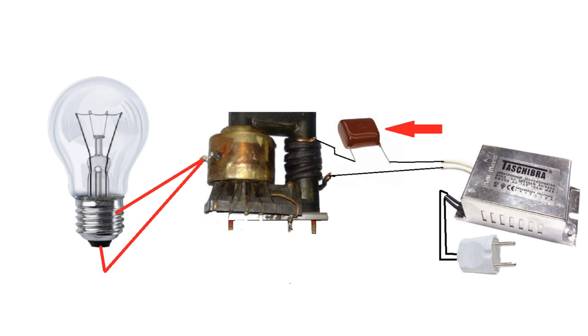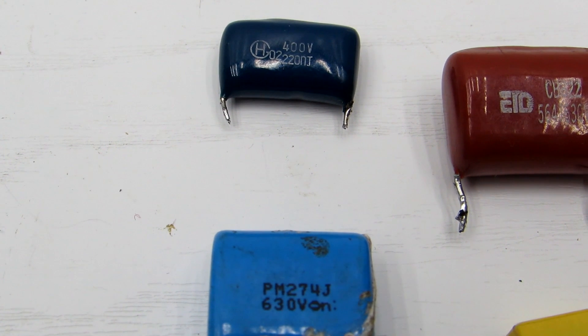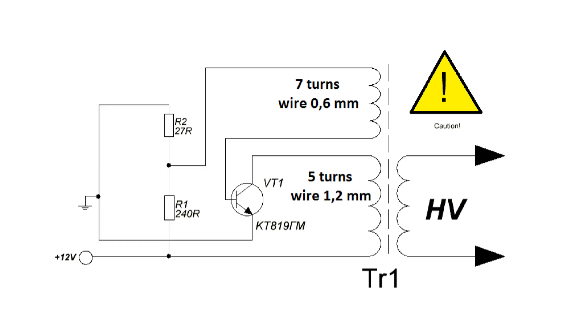To achieve the best effect, it is necessary to choose the capacity of the capacitor. Here is the simple scheme of the same device, but with a low voltage power supply. It is built with only one transistor. The optimal supply voltage is 9-12 Volts.